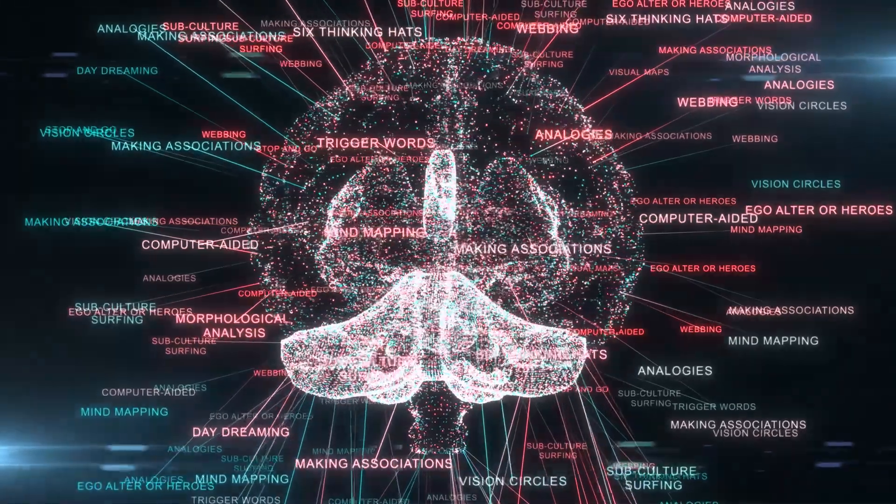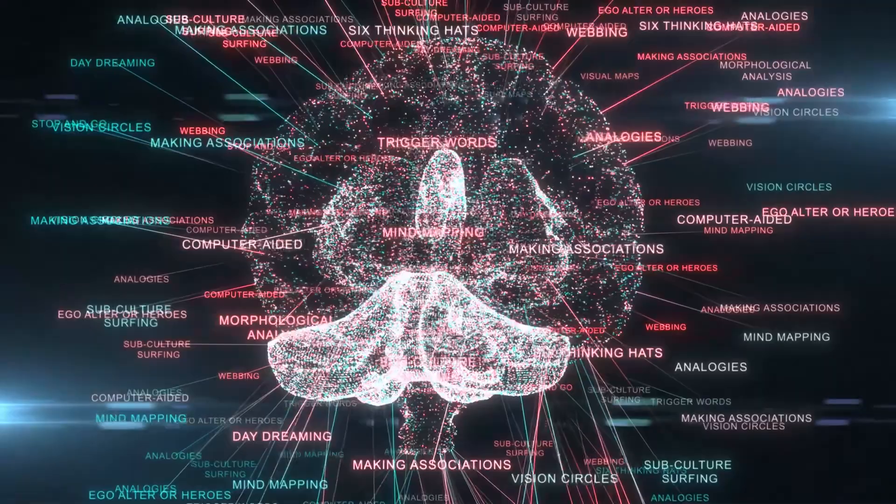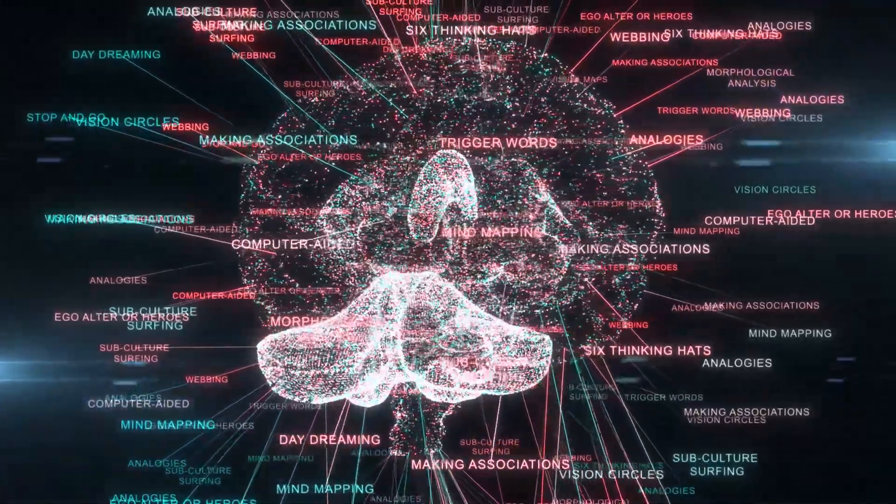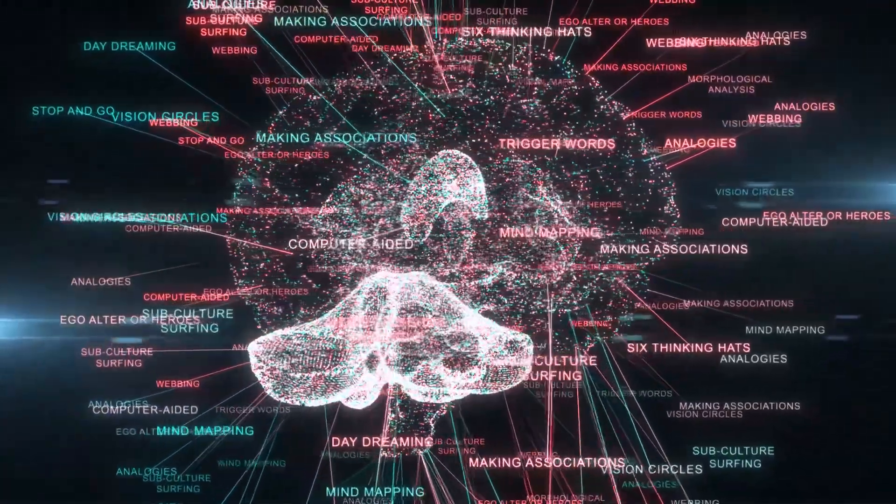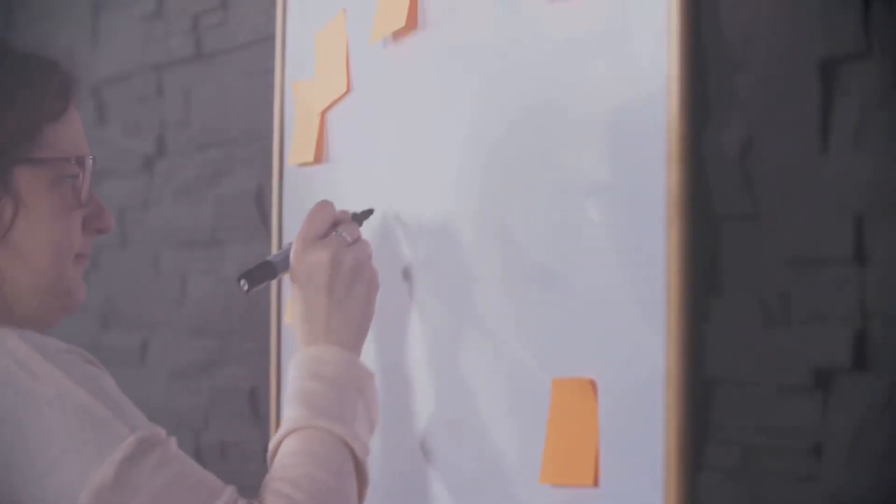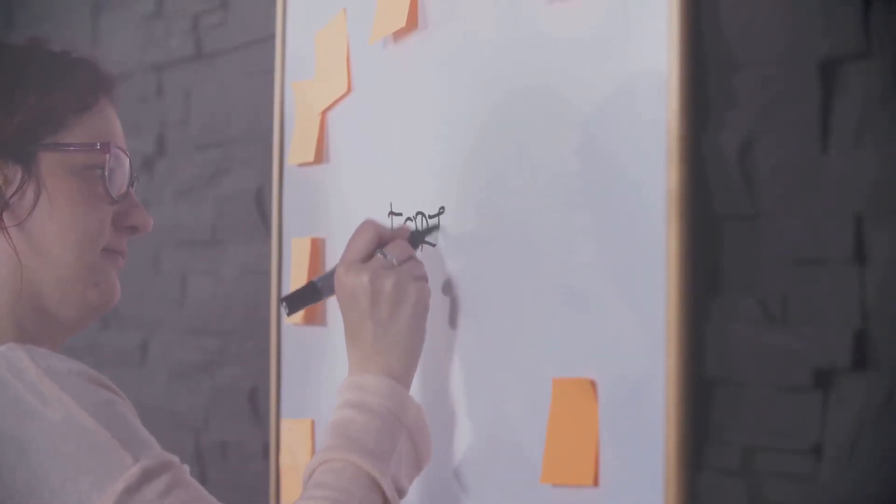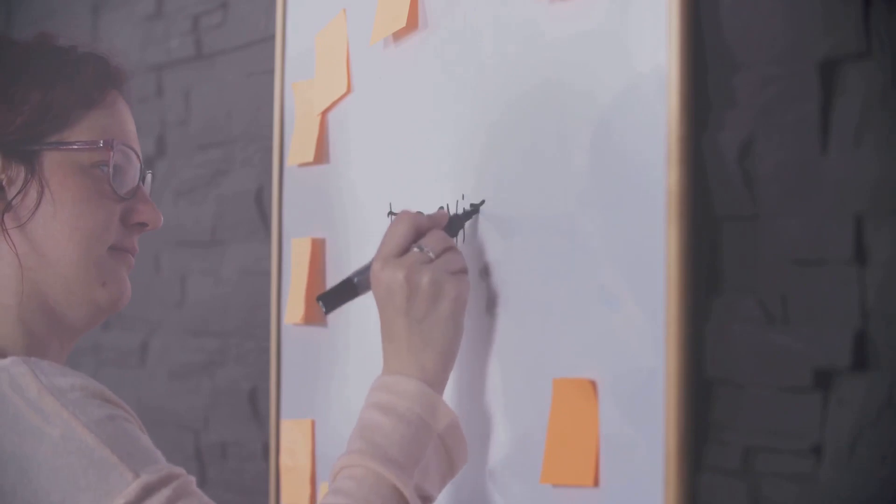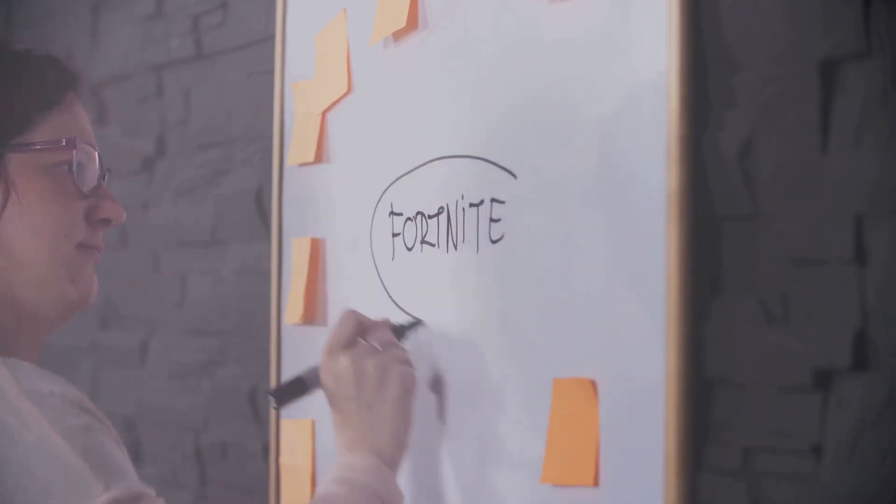Now let's grow some branches. These are the main thoughts or ideas that stem from your central idea. Draw lines outward from your central idea and label them with these main thoughts. Keep in mind that clarity is key. Use single words or short phrases that encapsulate your ideas succinctly.